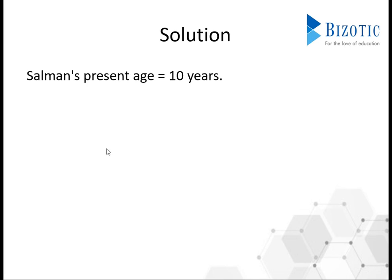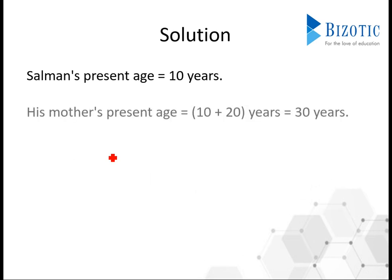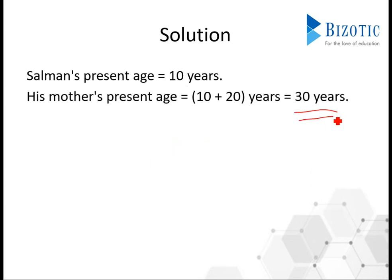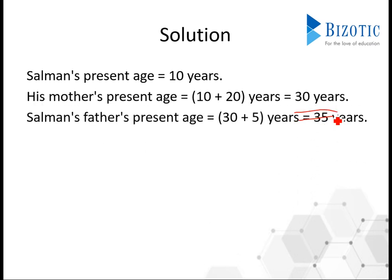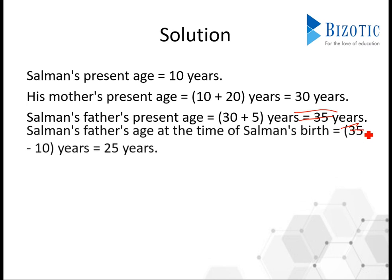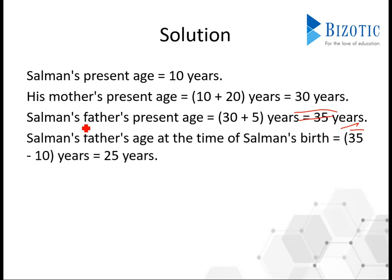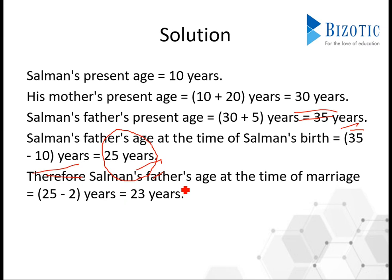Salman's present age is 10 years, so his mother's age is 10 + 20 = 30 years. The mother is 5 years younger than the father, making father's age 35 years. The father's age at Salman's birth was 35 - 10 = 25 years. Since Salman was born 2 years after his father's marriage, the father's age at marriage was 25 - 2 = 23 years. The answer is option C, 23 years.